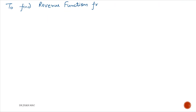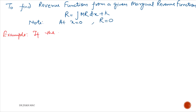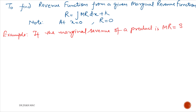To find the revenue function from a given marginal revenue, we integrate marginal revenue with respect to x. Revenue is denoted by R and marginal revenue by MR. So R equals integration of MR with respect to x plus k, and always remember that at x equal to 0, revenue equals 0.